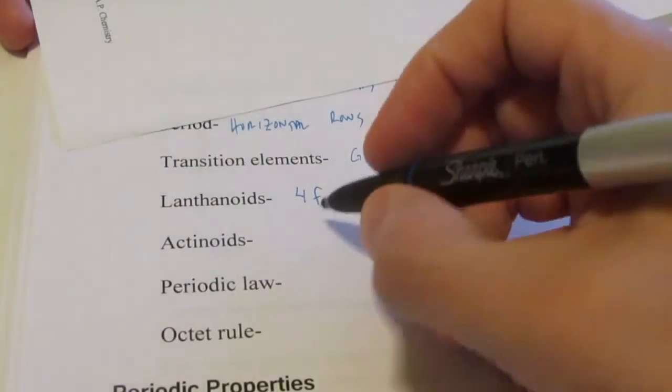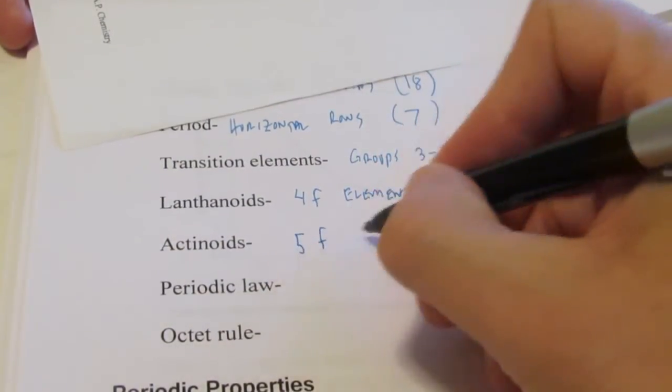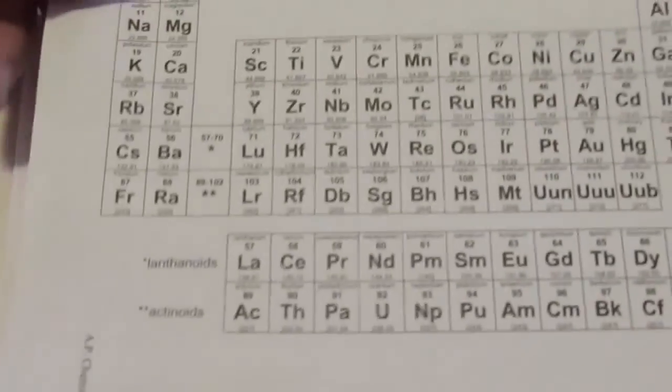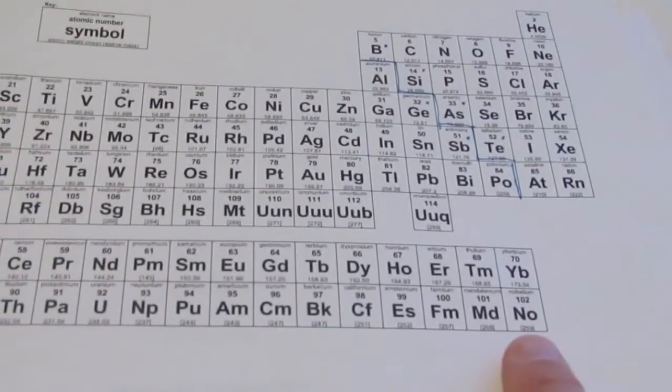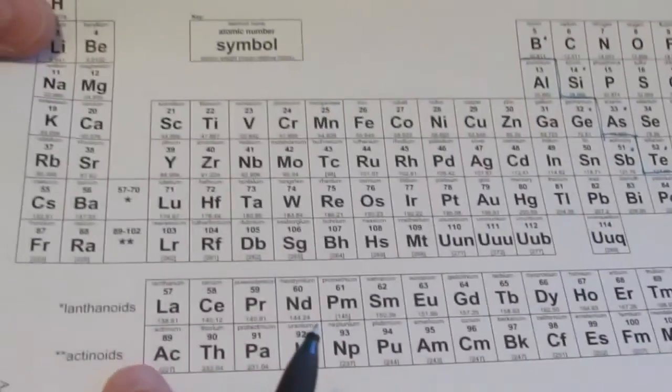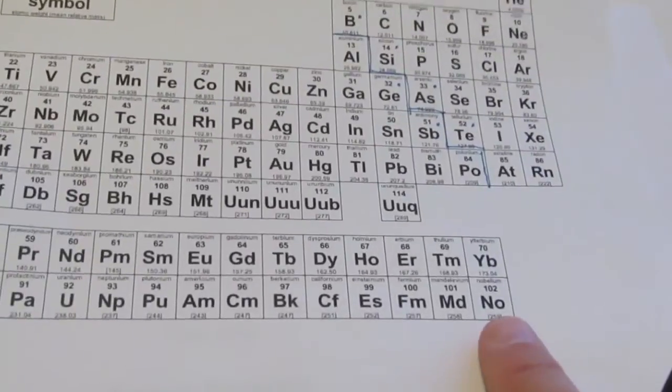And the actinoids are the 5F elements. They include elements actinium all the way through nobelium, atomic numbers 89 through 102.